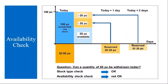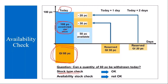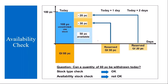Let me show you a diagram to explain this. Suppose today in my warehouse I have 100 pieces of unrestricted use stock. I want to issue 60 pieces today. In static availability check, it will just check the stock — I need 60 pieces and I already have 100, so there is no problem. In this case, static availability check says it is okay. I will explain dynamic availability check in a moment, but first let me show you this in the system.